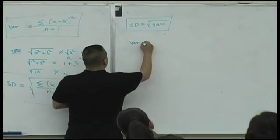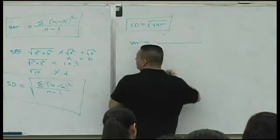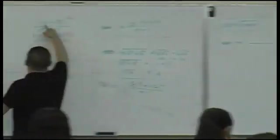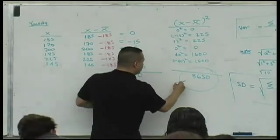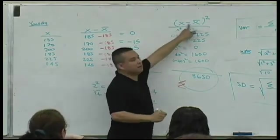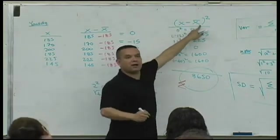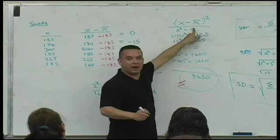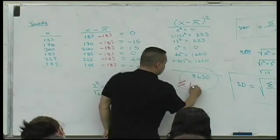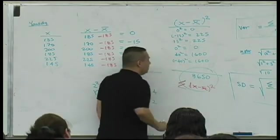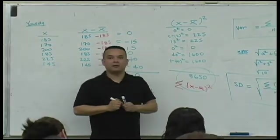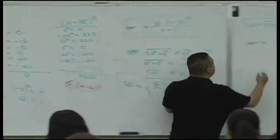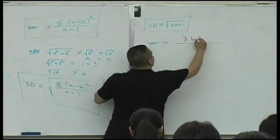The variance is, well, guess what? What is this? Isn't that the sum? The sum of what? That information? Isn't that what it is? The sum of this? Right? You already have the numerator for your variance. It's what? 3,650.